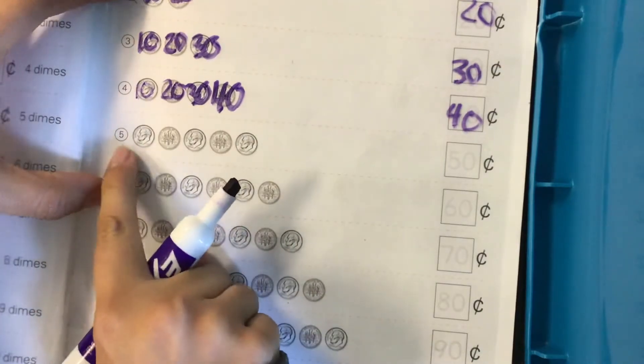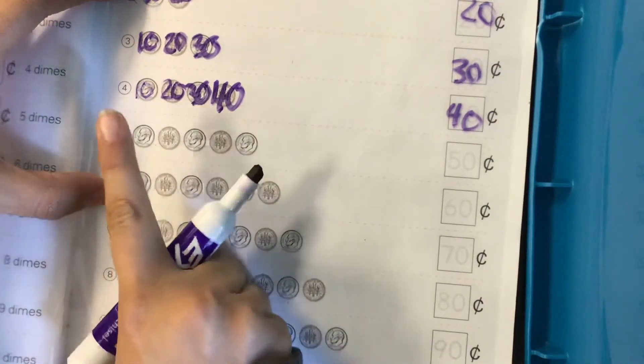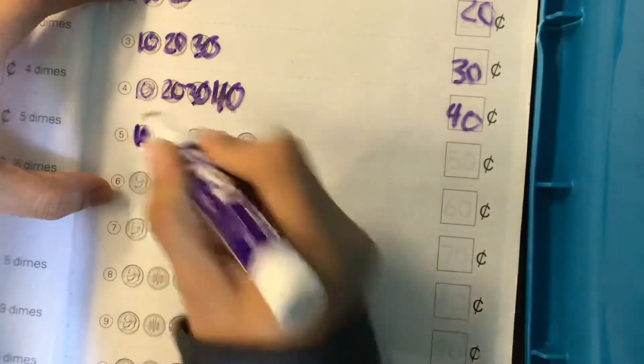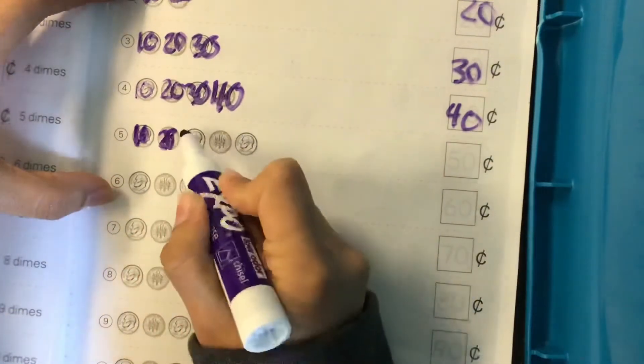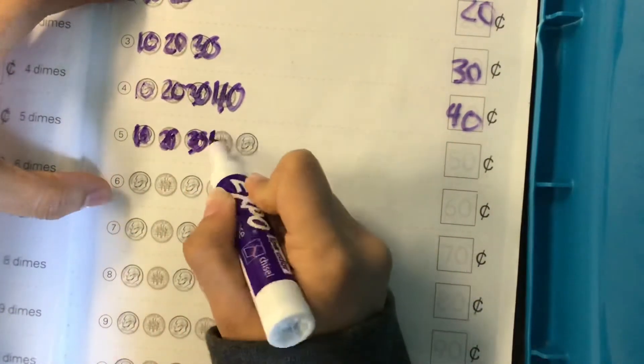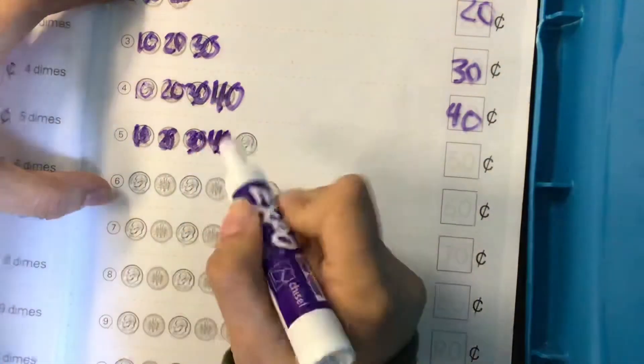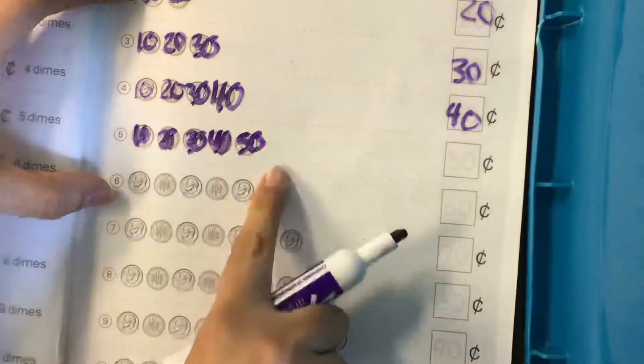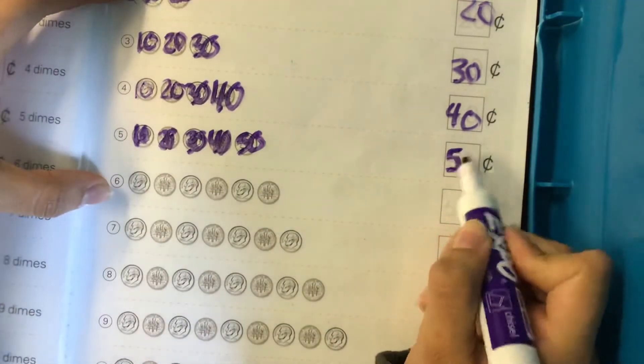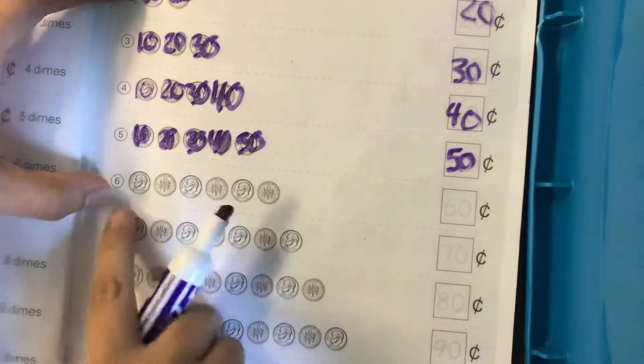Skip count with me. Number five. We're gonna start with ten, twenty, thirty, forty, fifty. So there are fifty cents in row five. Ready? Let's do row six.